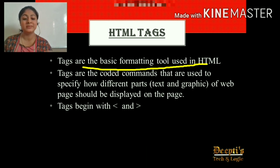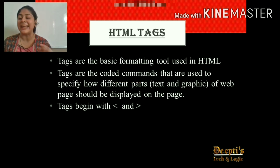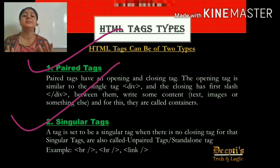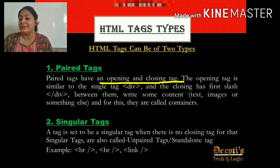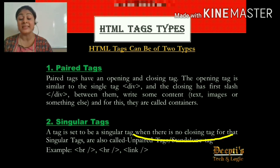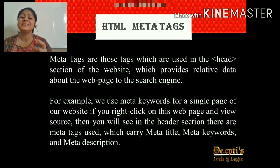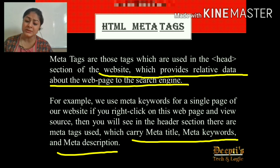HTML tags are the basic formatting tools used in HTML — coded commands which specify how different parts of text or graphics of a web page should appear. HTML tags are divided into two types: pair tags and singular tags. Pair tags have opening and closing tags and always work in pairs. Singular tags — like break line, horizontal line, and link — do not need a closing tag but work fine. Meta tags give relevant data about the web page to the search engine, and we have many keywords for meta information which we will discuss later.